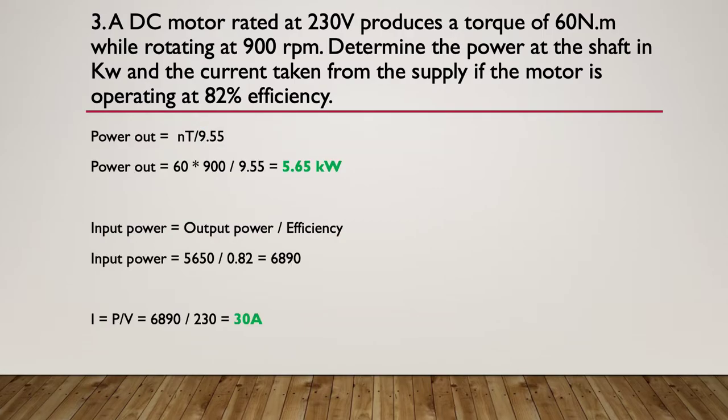So here's our fully worked answer. The power out formula is simply Nt. So we were told that we had 60 Newton meters, 900 RPM, divide all that by our constant of 9.55, giving us 5.65 kilowatts.